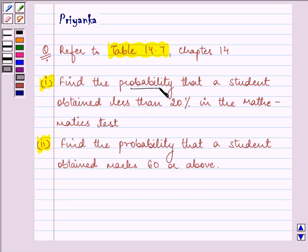First, find the probability that a student obtained less than 20% in the mathematics test. Next, find the probability that a student obtained marks 60 and above.